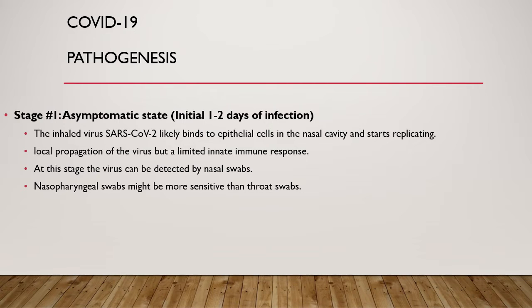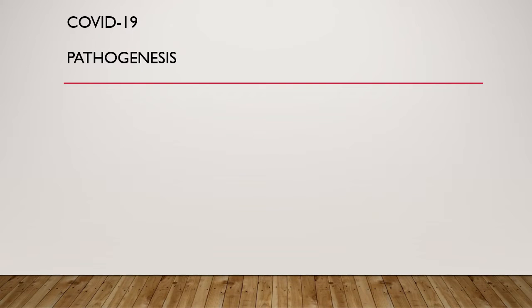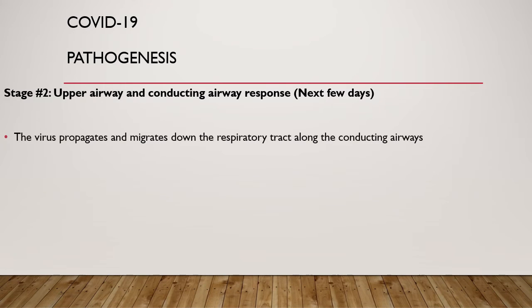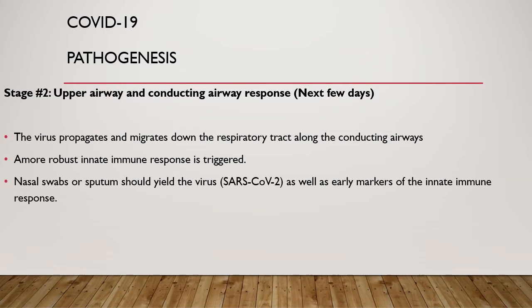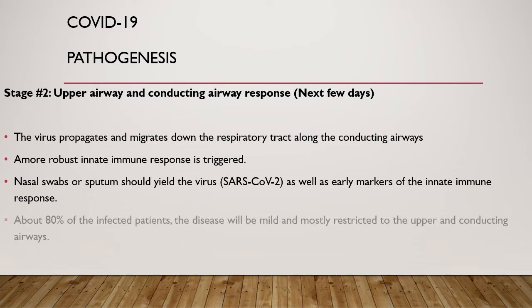After a few days of the asymptomatic first phase, the virus propagates and migrates down the respiratory tract along the conducting airways. Here, a more robust innate immune response is developed — innate immunity being the non-specific type of immune response. Nasal swab and sputum can now yield virus, and markers of immune response can be detected. This phase determines the course of disease progression. If the host innate immunity response is good, disease progression can be stopped. If not adequate, as in immunocompromised conditions, the disease can be serious. About 80% of infected people may have mild conditions restricted to the upper and conducting airways.